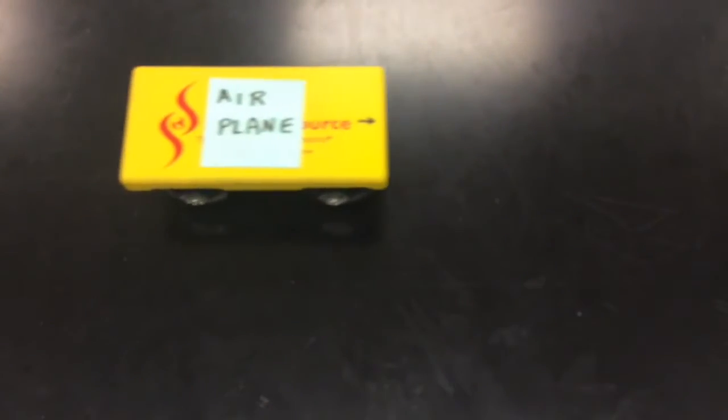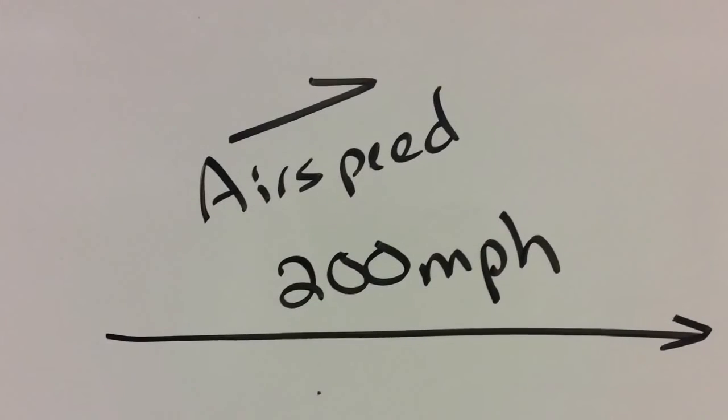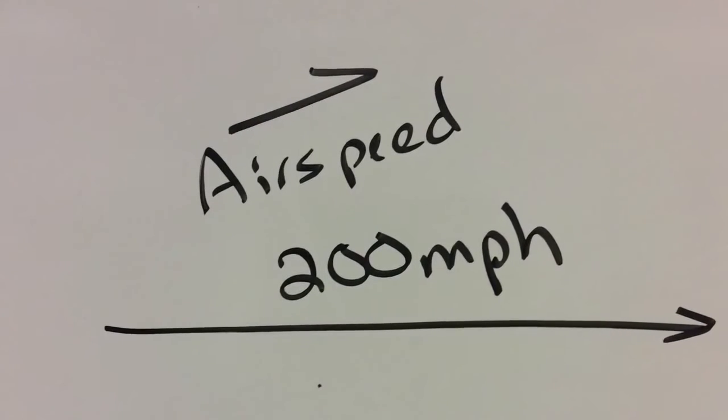There's an airplane traveling east at 200 miles an hour. That's called its airspeed. It is a vector measured from the plane with respect to the air around it.